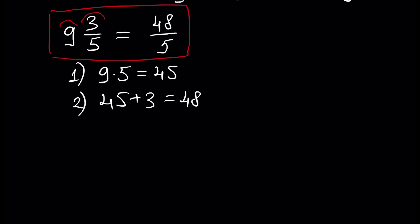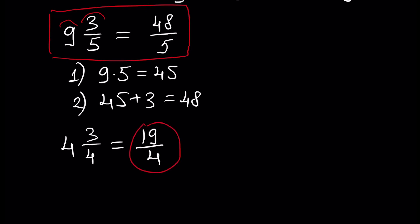Another example is 4 and 3 over 4. Multiply 4 by 4 to get 16, then 16 plus 3 is 19. The denominator is unchanged, giving 19 over 4. These improper fractions will be used further for the purposes of multiplication of fractions.